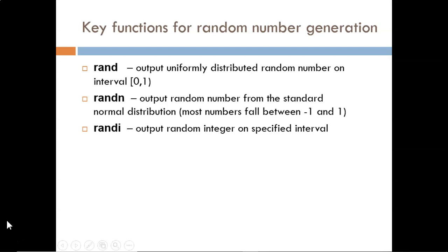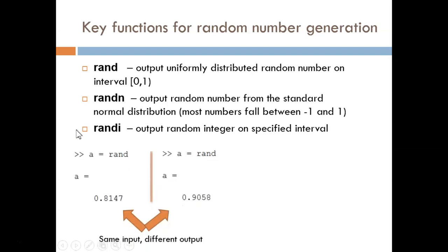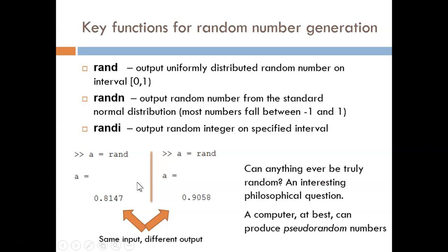First, let's look at three functions for random number generation: RAND, RANDN, and RANDI. An example of the RAND function is shown below. I called the function in the same way on two different occasions and received different results. Most other functions would return the exact same results if we pass in the same inputs. Can anything ever be truly random? That is an interesting philosophical question, but beyond the scope of this course.